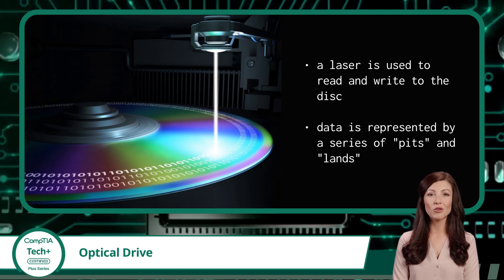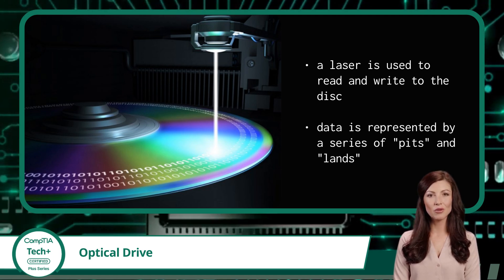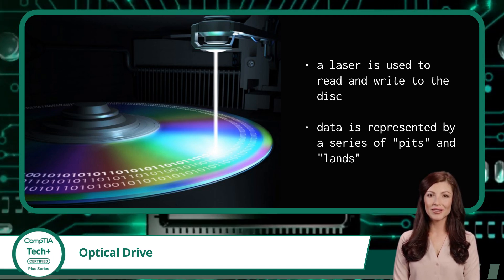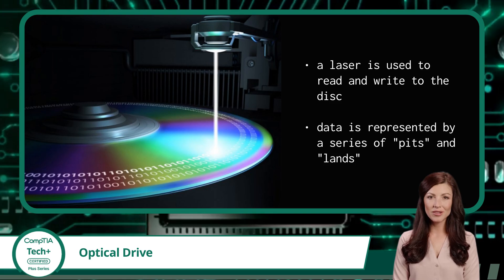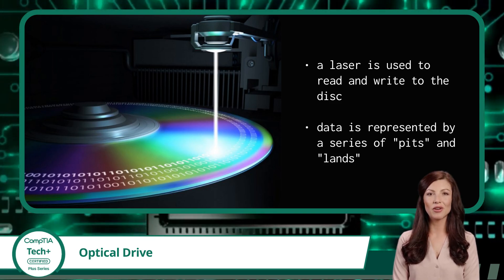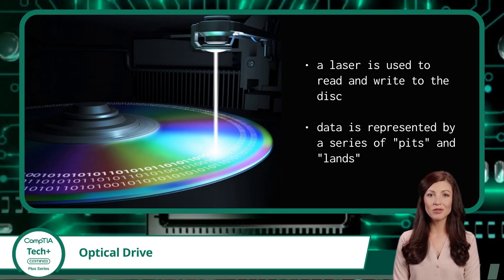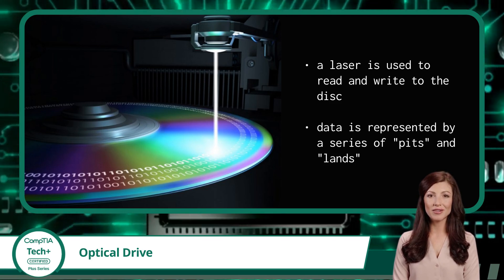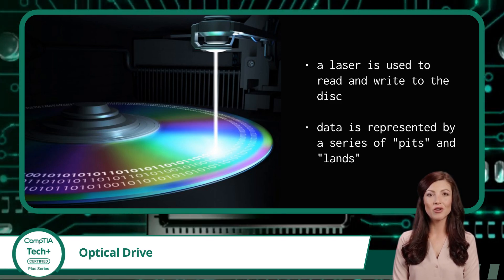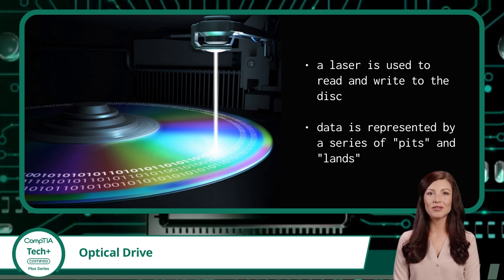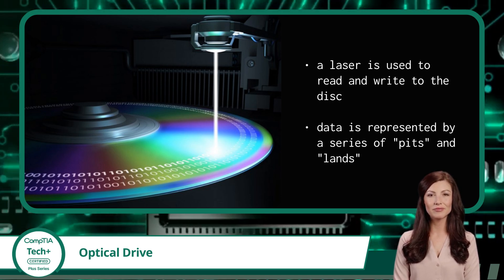As for how an optical drive works, it consists of a tray or slot where you insert the disk. When you insert a disk, the drive uses a laser beam to read the data stored on the disk's surface. The laser scans the disk, reflecting off its surface, and the drive interprets the reflected signals as digital data, such as audio, video, or computer files.